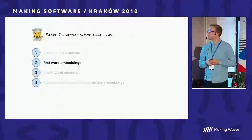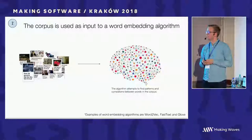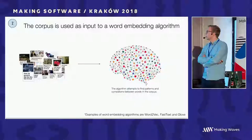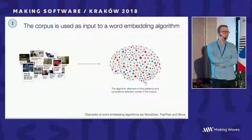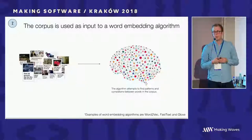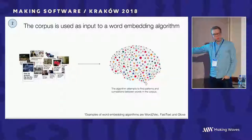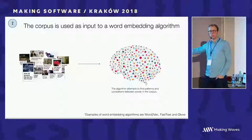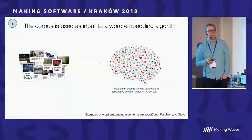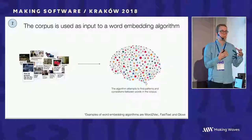The first step is done. The next step is to find word embeddings. This is where we start differing from bag of words. What we do is first find the mathematical representation of words before finding the mathematical representation of an article. There are well-known libraries for this: Word2Vec came first from Google, then Facebook built on top of that to create FastText, and there's also GloVe.